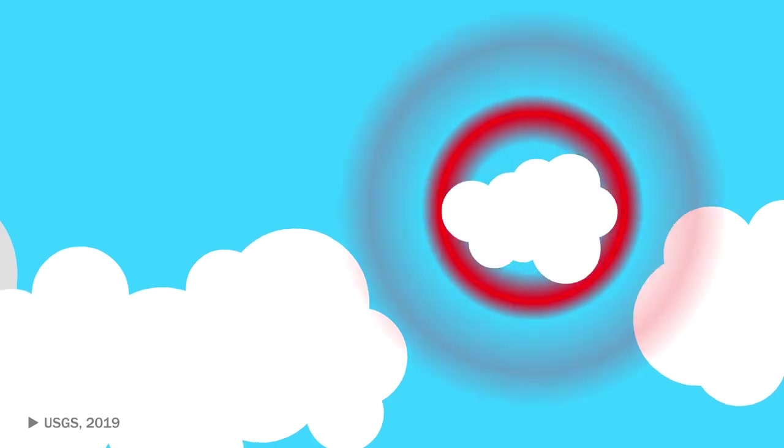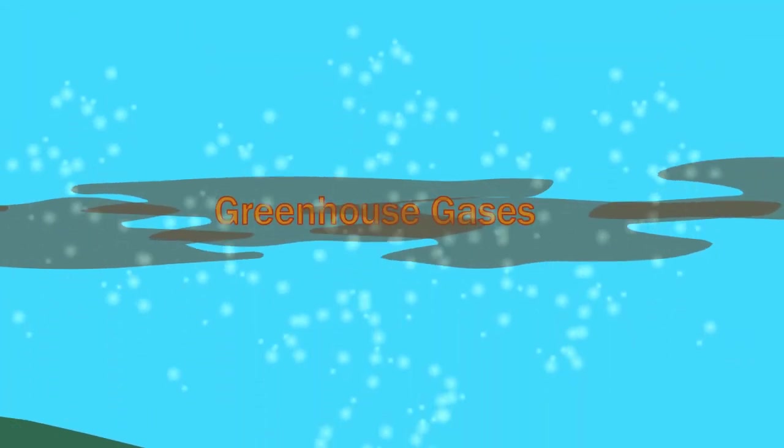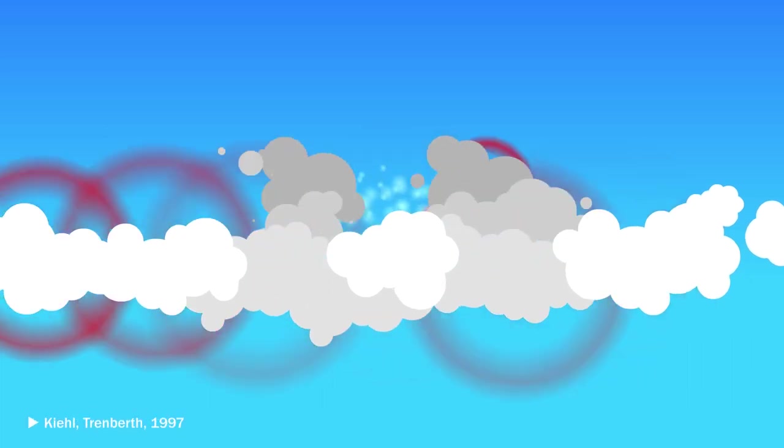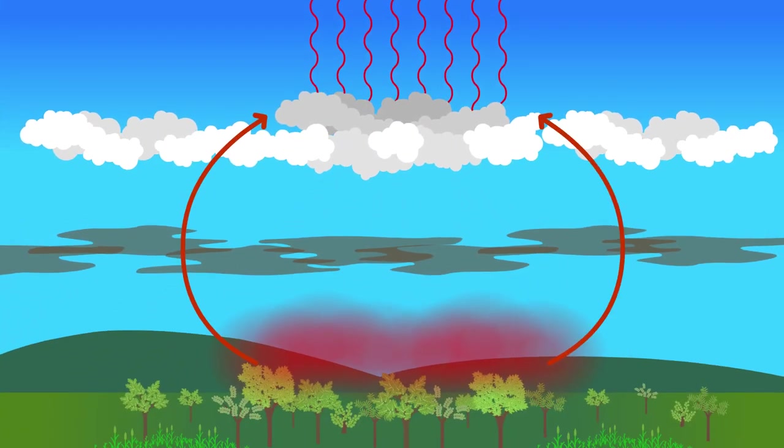When the water condenses at cloud level, it releases the heat that it absorbed during evaporation. Therefore, transpiration moves heat from the ground level, where it would have been trapped by greenhouse gases, up to high altitudes, where a lot of it, as much as half according to some experts, radiates back into space. Heat exits the earth and the earth cools down.